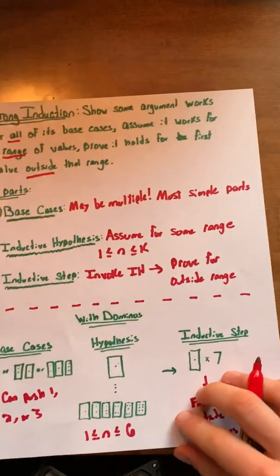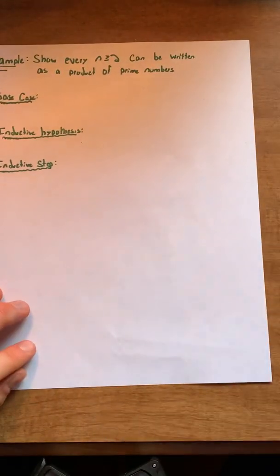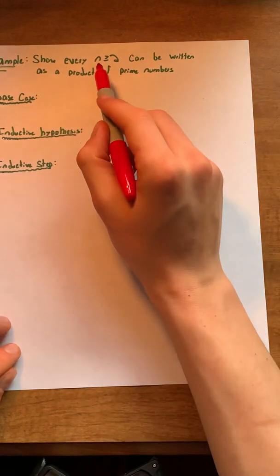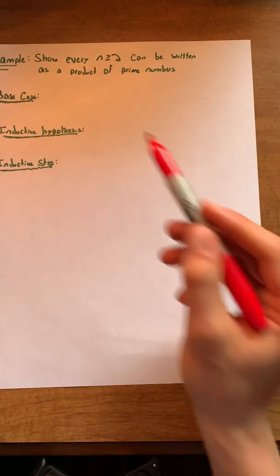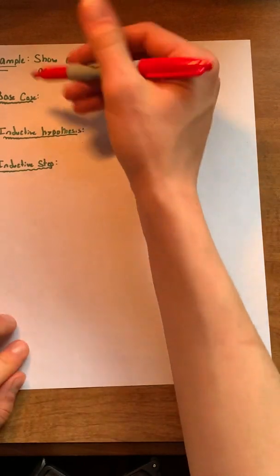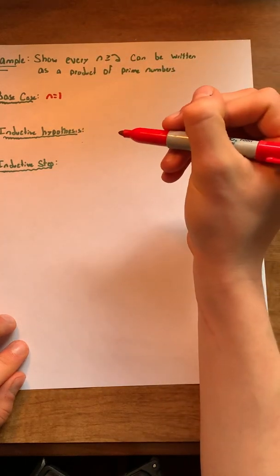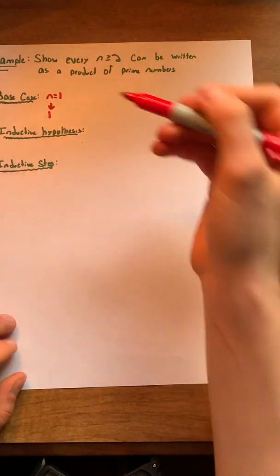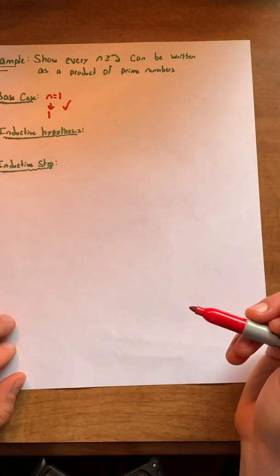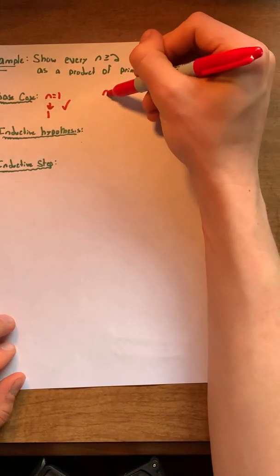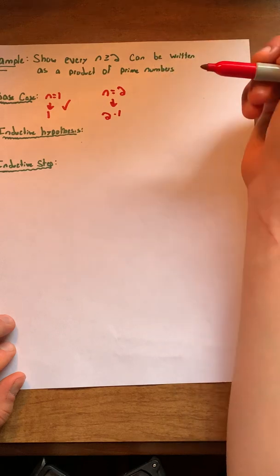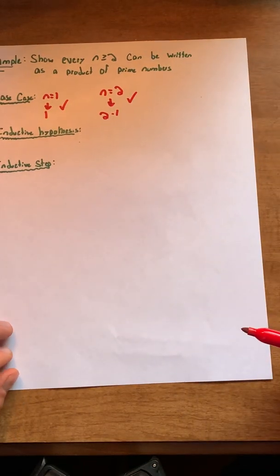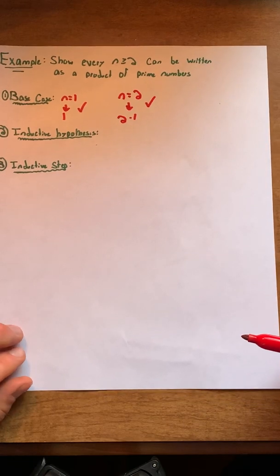Now let's move on to an actual example problem. We want to show that every number n ≥ 2 can be written as a product of prime numbers. First, we need to work with our base cases. Our first base case is n = 1; this can simply be written as 1, which is a prime number, so that works. Our second base case is n = 2; 2 can be written as 2 times 1, which are both prime numbers, so that base case works too. Thus, we have proven both of our base cases.